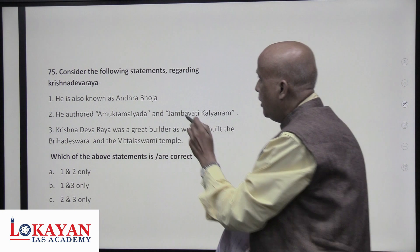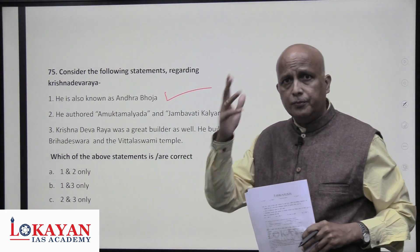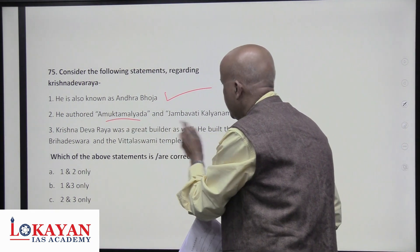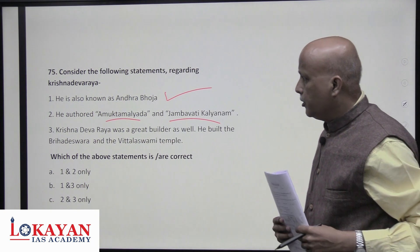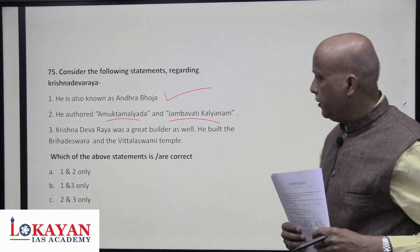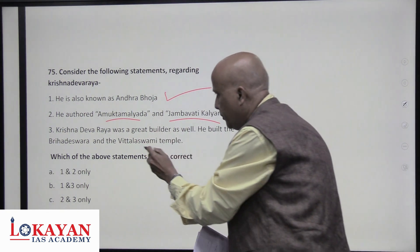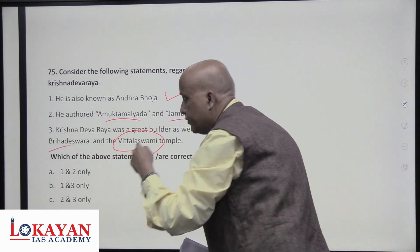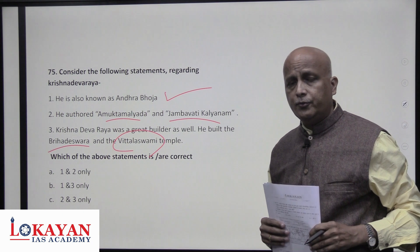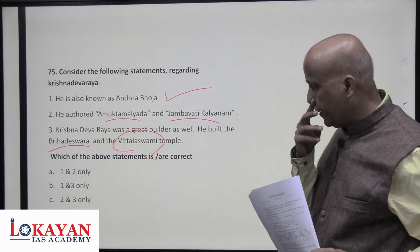Regarding Krishnadevaraya: he is known as Andhra Bhuja and also as Abhinava Bhoja. He authored Amuktamalyada (in Telugu) and Jambavati Kalyana (in Sanskrit) — correct. He built the Vithala Swami temple — correct. However, the Brihadeshwara temple was built by the great Chola king Raja Raja I, not by Krishnadevaraya — so the third statement is not correct. Only statements one and two are correct.